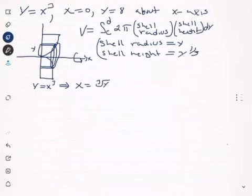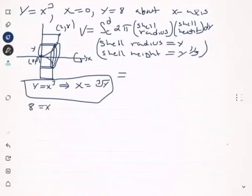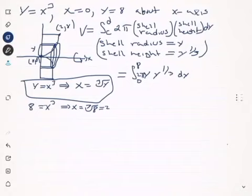Now we need the bounds. The points of the region are (0, 0) and (2, 8), because when y equals eight, x cubed equals eight, so x equals the cube root of eight, which is two. Since we integrate with respect to y, the limits go from zero to eight. The shell radius is y and the shell height is y to the one-third power, and we have the 2π out front.